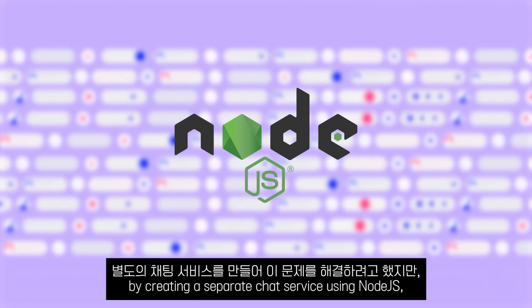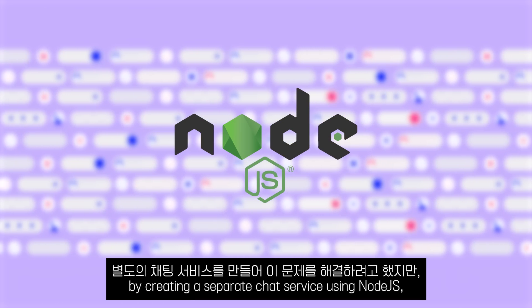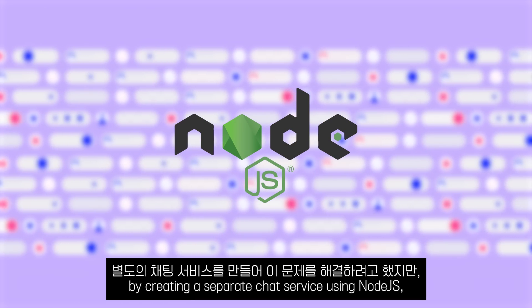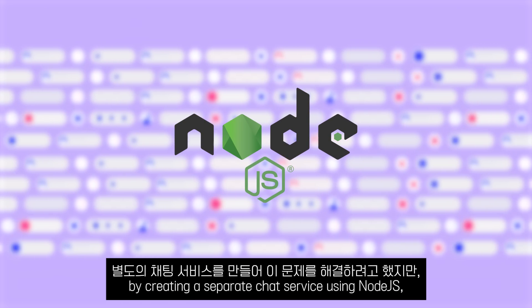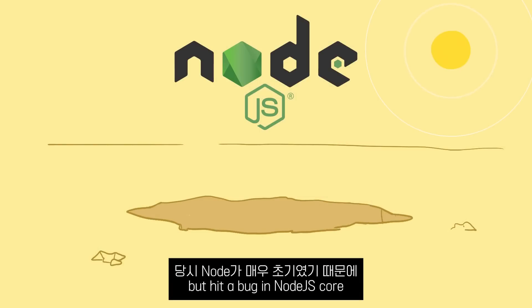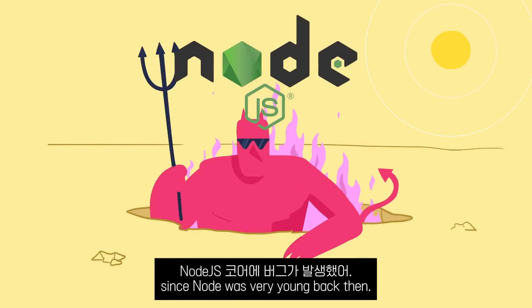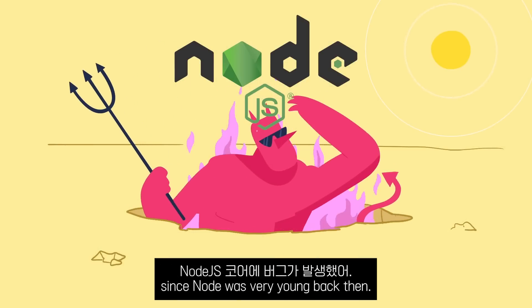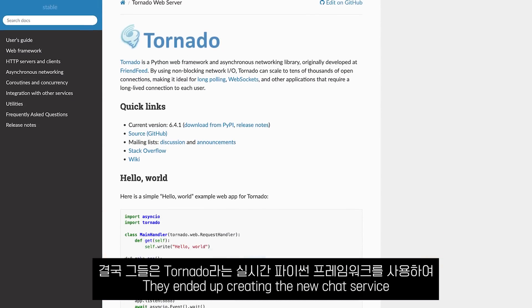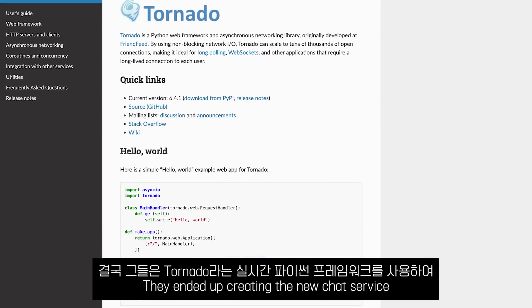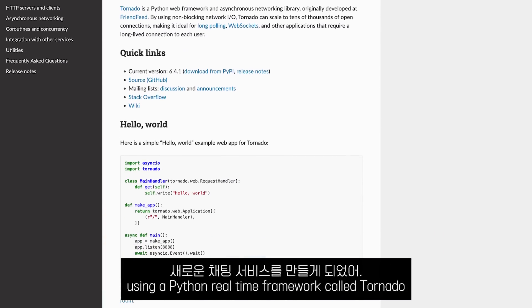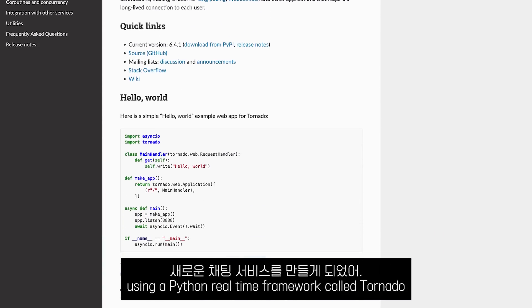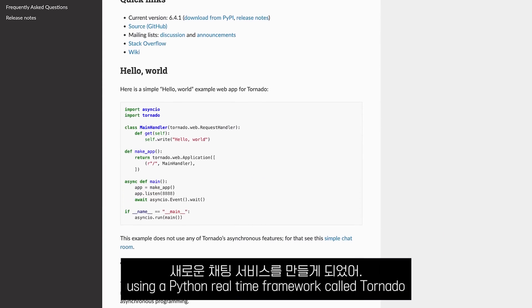Twitch tried fixing this by creating a separate chat service using Node.js, but hit a bug in Node.js core since it was very young back then. They ended up creating the new chat service using a Python real-time framework called Tornado.